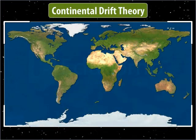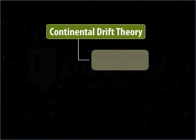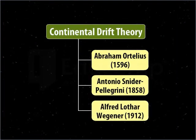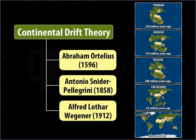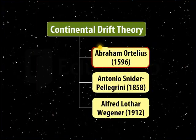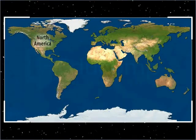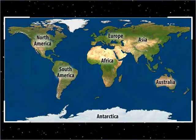The Continental Drift Theory describes how continents and oceans were formed after drifting apart from a single landmass and water body. In this module, you will learn about the contributions of three important geographers who were instrumental in formulating the Continental Drift Theory. We will also take a quick look at the drift theory of the formation of continents.